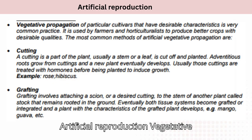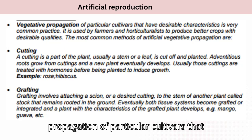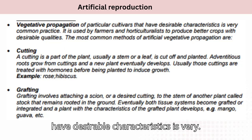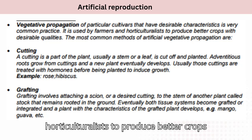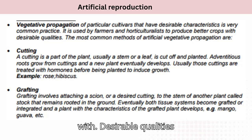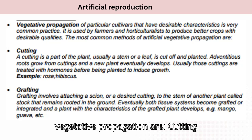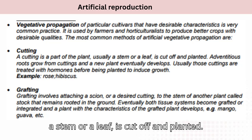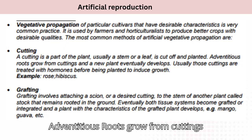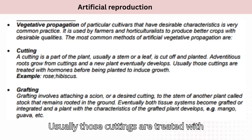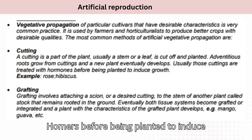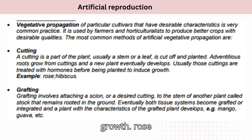Artificial reproduction: vegetative propagation of particular cultivars with desirable characteristics is very common practice. It is used by farmers and horticulturalists to produce better crops with desirable qualities. The most common method is cutting — a cutting is a part of the plant, usually a stem or leaf, that is cut off and planted. Adventitious roots grow from cuttings and a new plant eventually develops. Usually these cuttings are treated with hormones before being planted to induce growth. Examples: rose, hibiscus.